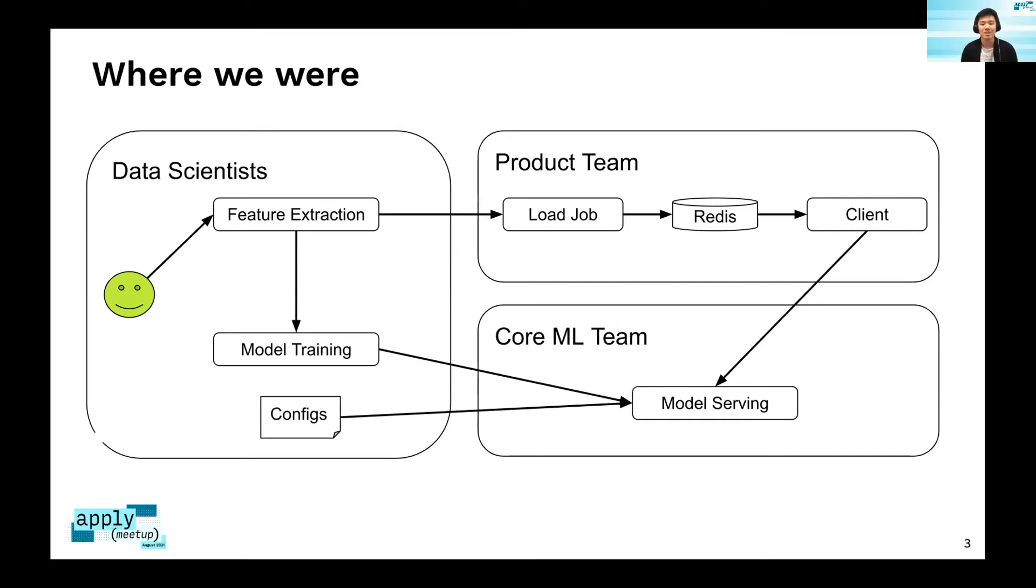With these questions in mind, I also want to talk about where we were before. This diagram shows before we had this feature store project. Data scientists were in charge of the feature extraction pipeline and the model training because they are the ones who build the features and know the business logic way much better. So they build a model and after they have the model they would also bring up some model servers, and that's the place where the product team will send requests to.